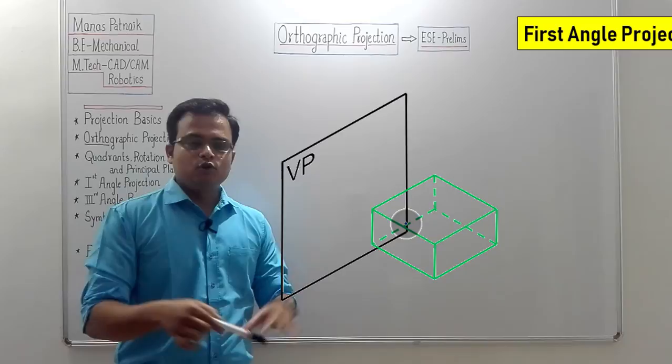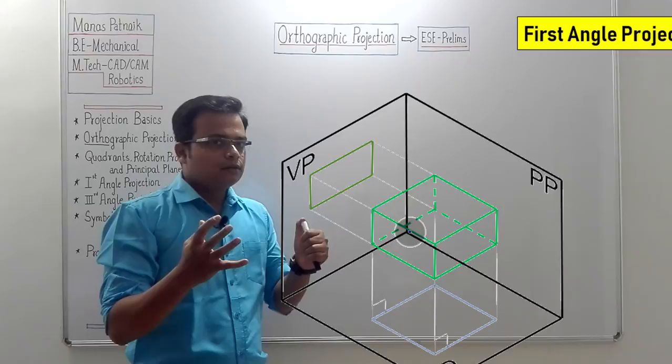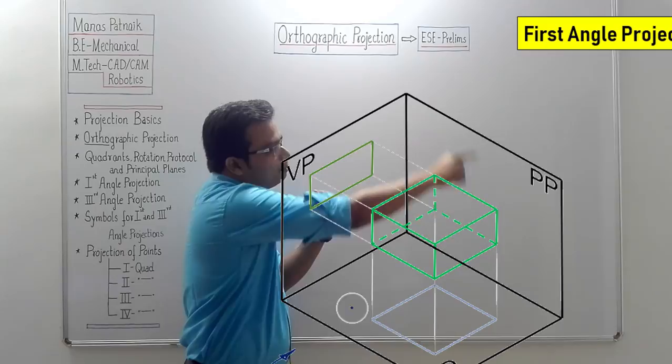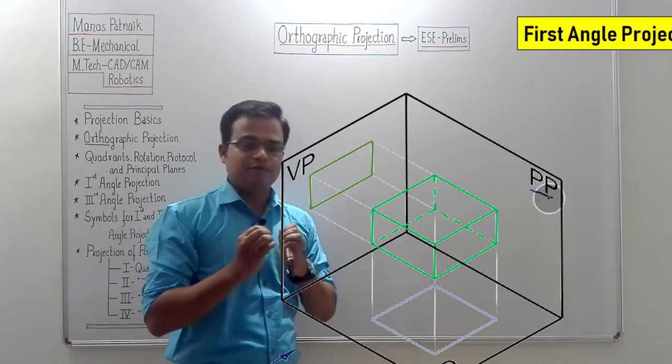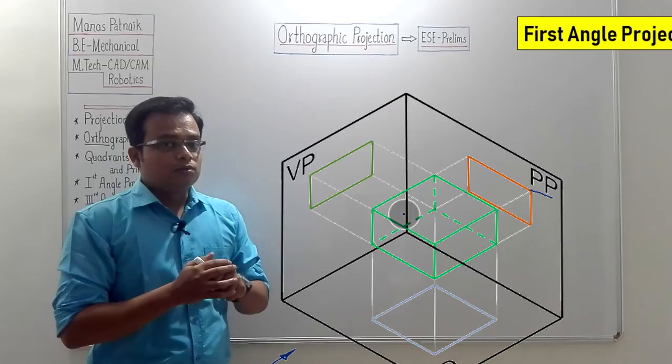In first angle projection, the object is above HP and in front of VP. The front view is obtained on the VP, and the top view is obtained on the horizontal plane. For the left-hand side view, a profile plane is placed behind the object. Always remember: HP for the top view, VP for the front view, and PP (profile plane) for the side view. These three views are obtained on three mutually perpendicular planes: HP, VP, and PP.